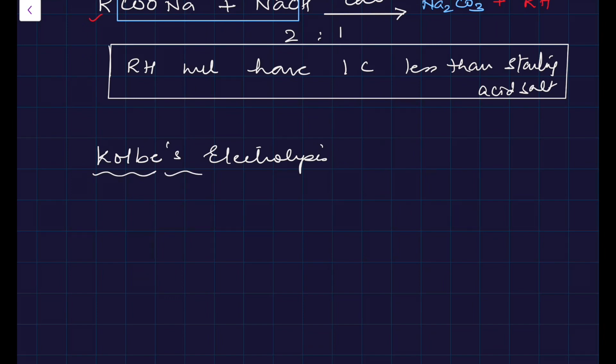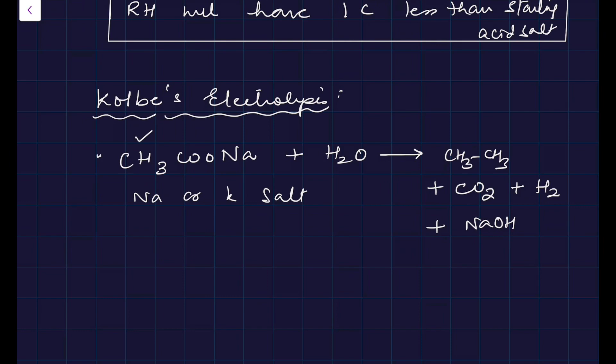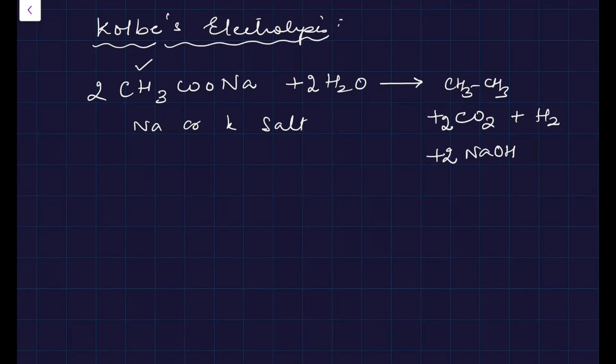Second method of decarboxylation is Kolbe electrolysis. In Kolbe electrolysis, you can take potassium salt also, so you can take sodium or potassium salt of acid, CH3COONa in water. The products you get are CH3-CH3, that is the alkane, you get CO2, you get hydrogen, and NaOH. If you want to write balanced reaction, although in organic balancing doesn't have much relevance, but sometimes to understand the product, balancing becomes easy.